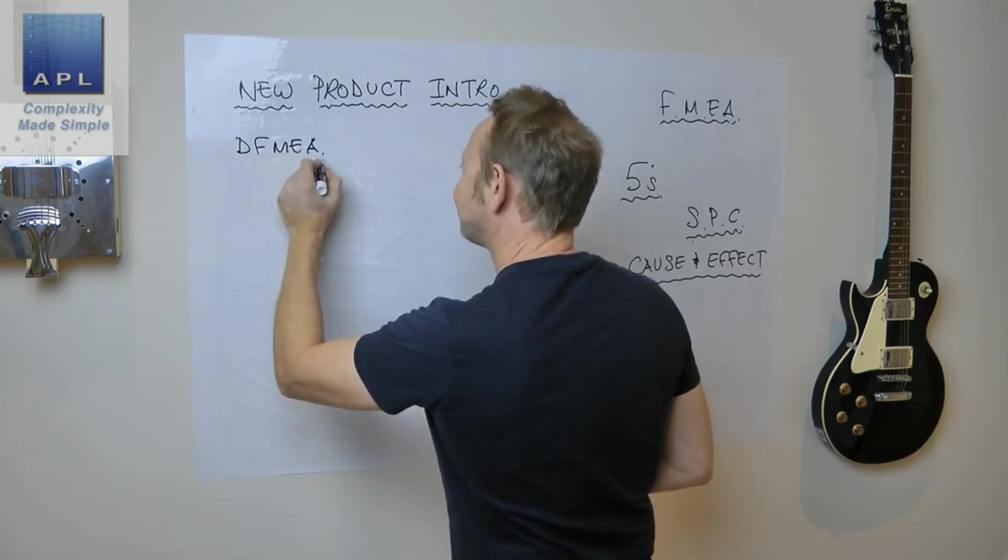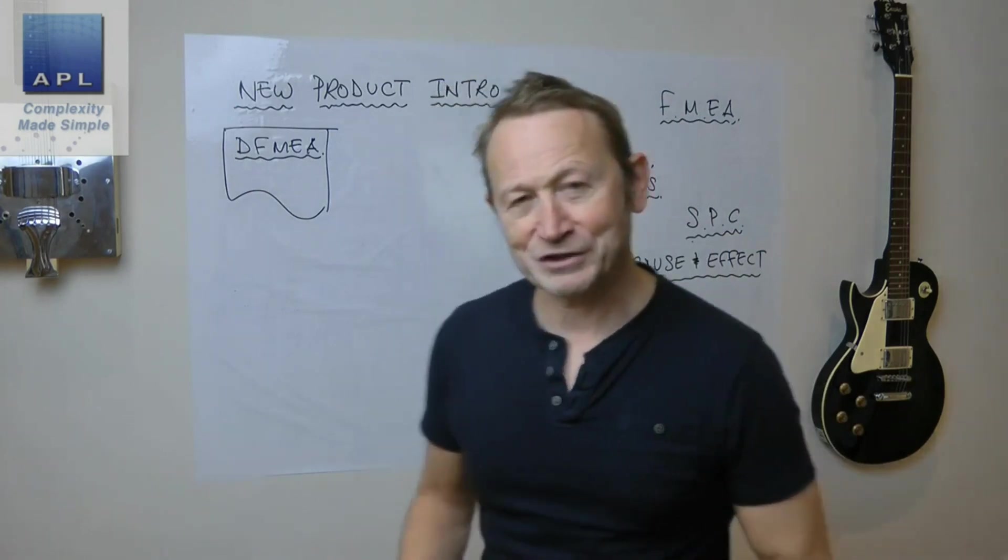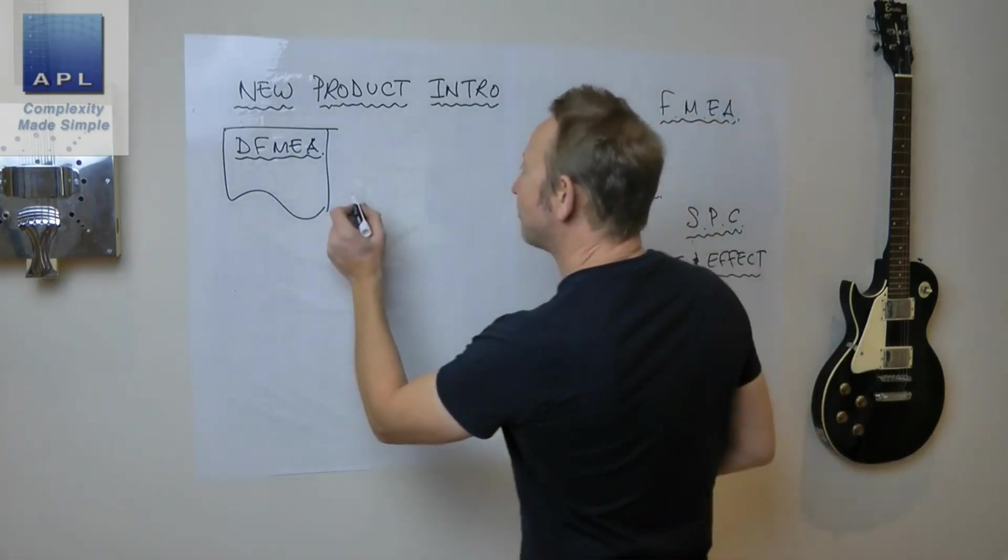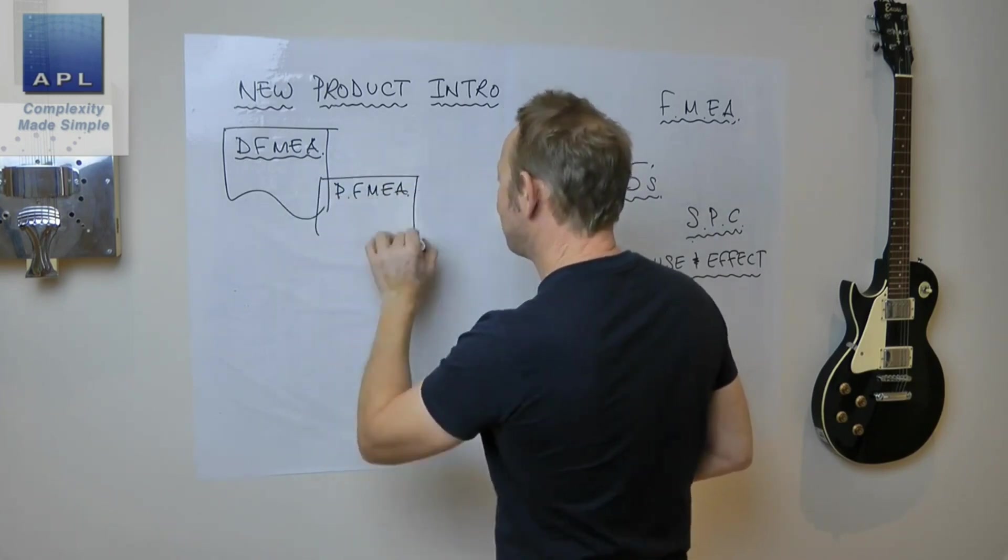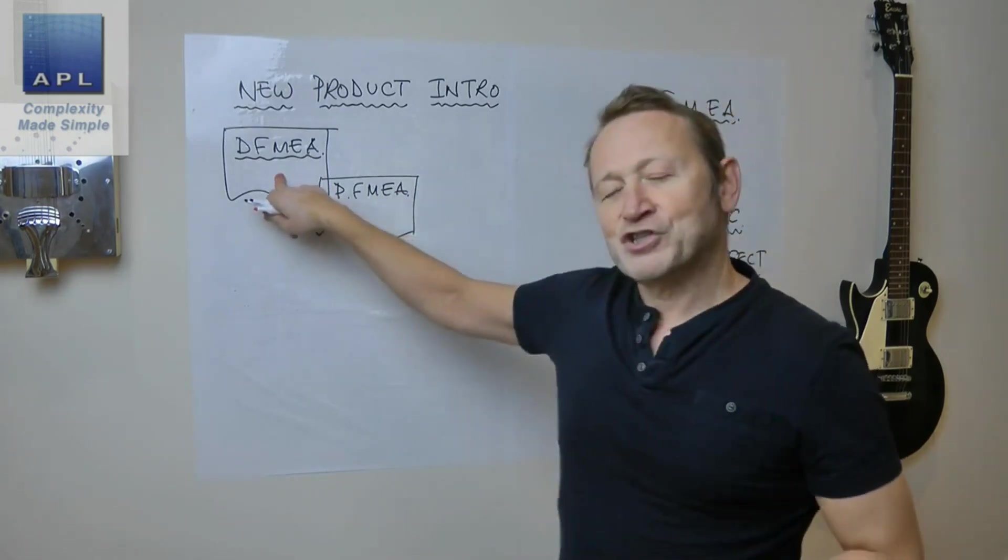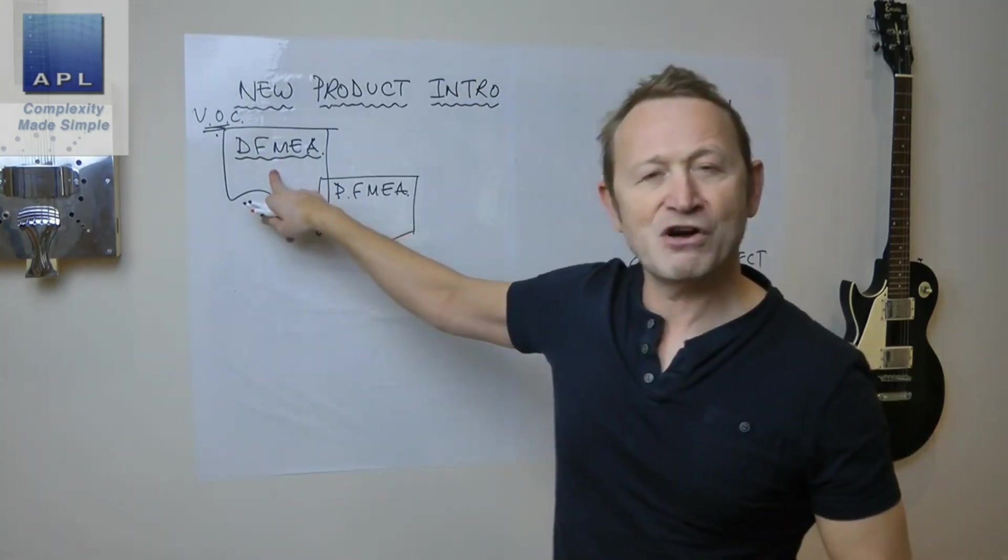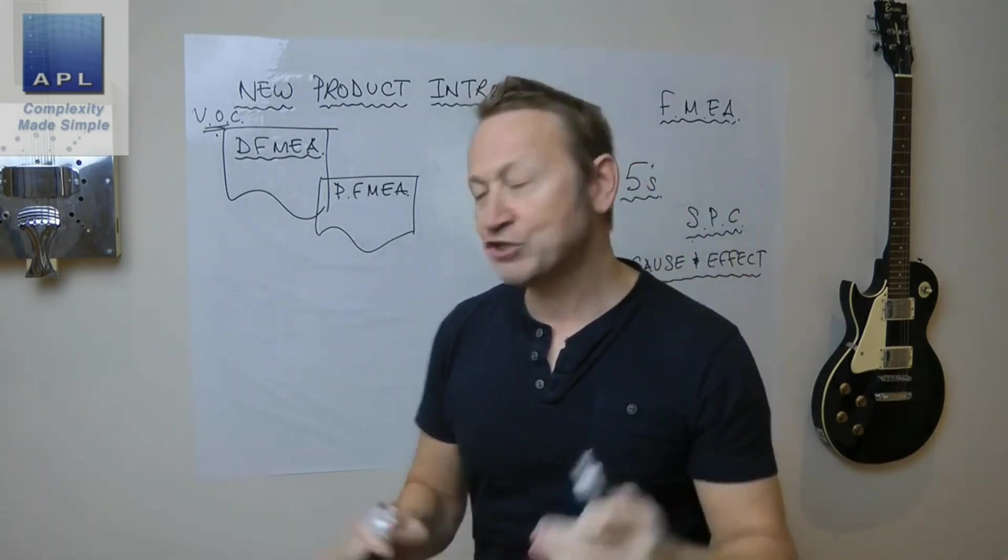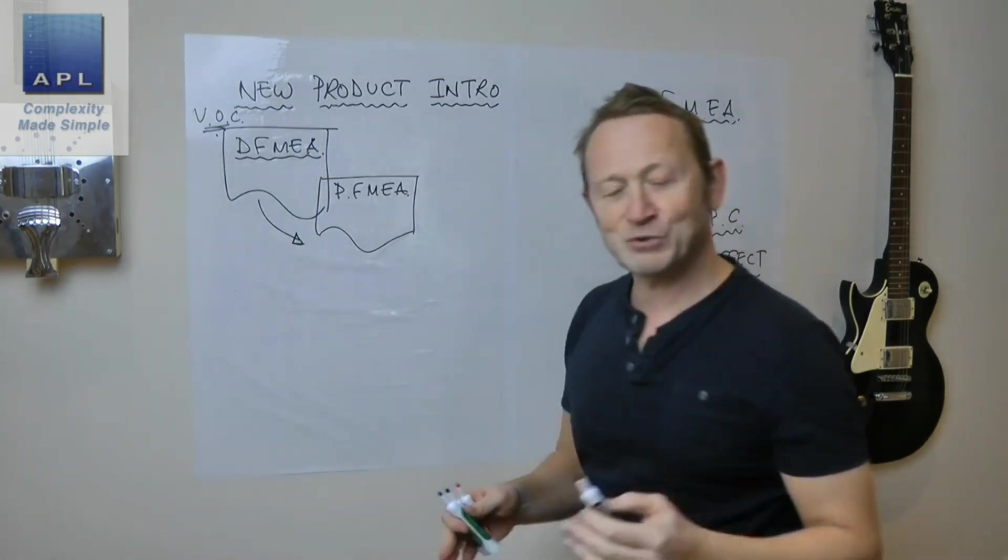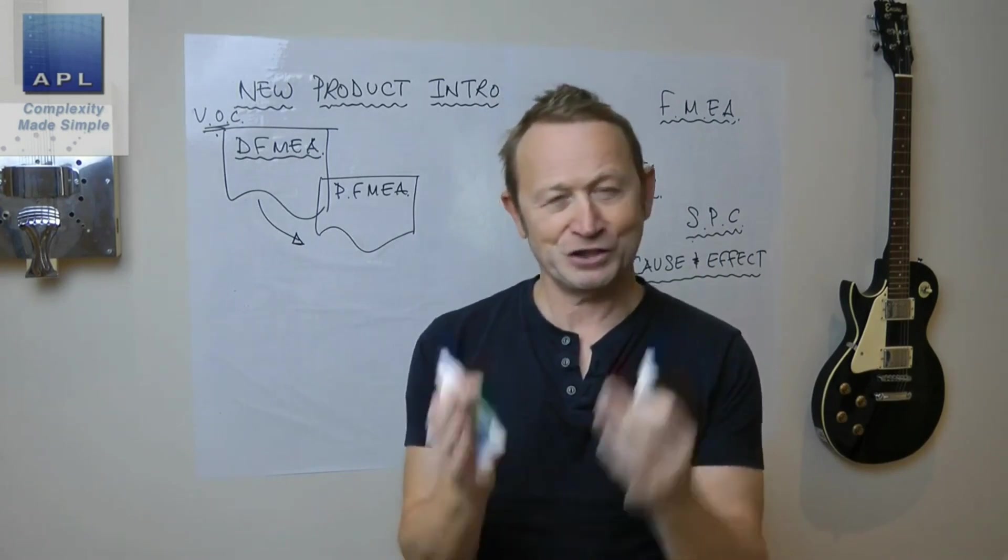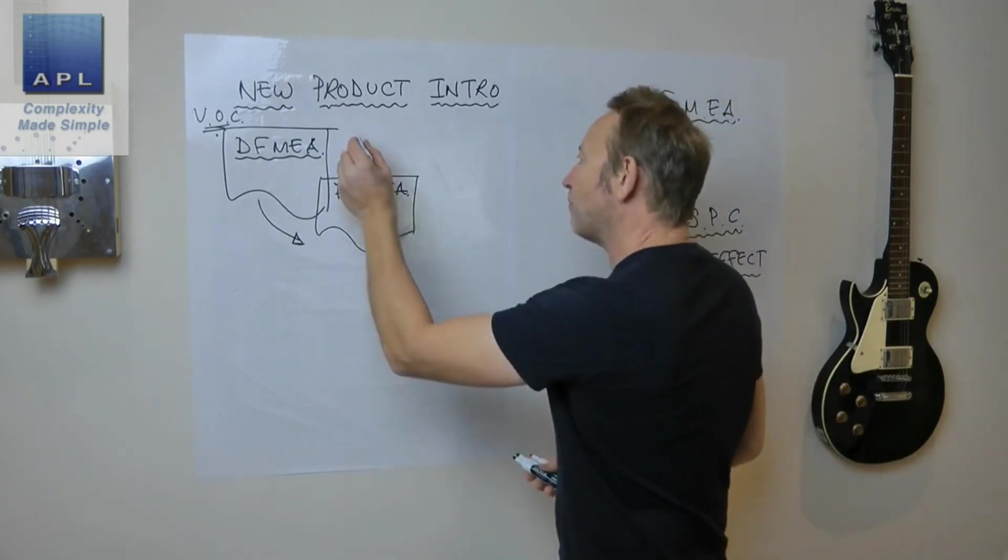Let's go through this as a set of steps. The first one, the design FMEA, is probably the first document that's going to get done. The design FMEA is supposed to talk to the process FMEA. What the design FMEA is doing is turning the voice of the customer. The voice of the customer goes into the design FMEA such that all the tolerances and design intent sits in here. This is the designer's thought process.